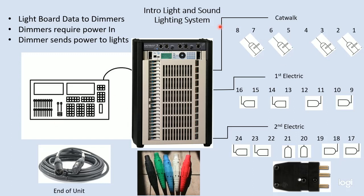So that's an outline of a simple theatrical lighting system: our light board, our dimmers, our circuits that go to the stage or to the front of house, and then our lights that plug into those circuits. We'll talk more about data in our next video.